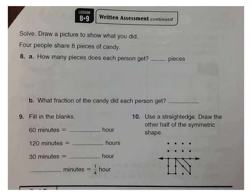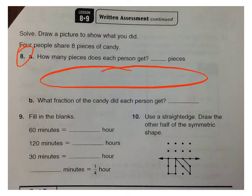Number 8. So this is a solve. Draw a picture to show what you did. Four people share 8 pieces of candy. So there's 8 pieces of candy going between 4 people. You want to draw a picture of this. How many pieces does each person get? Draw your picture in here, but don't forget to answer how many pieces they get. They'll each share it equally.